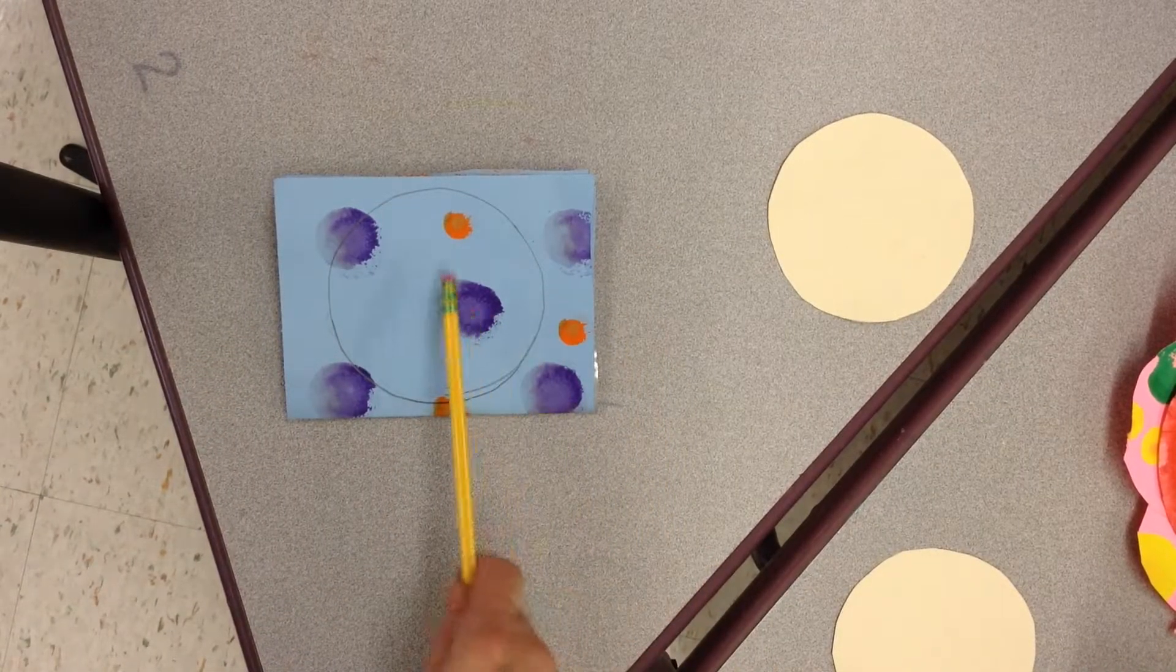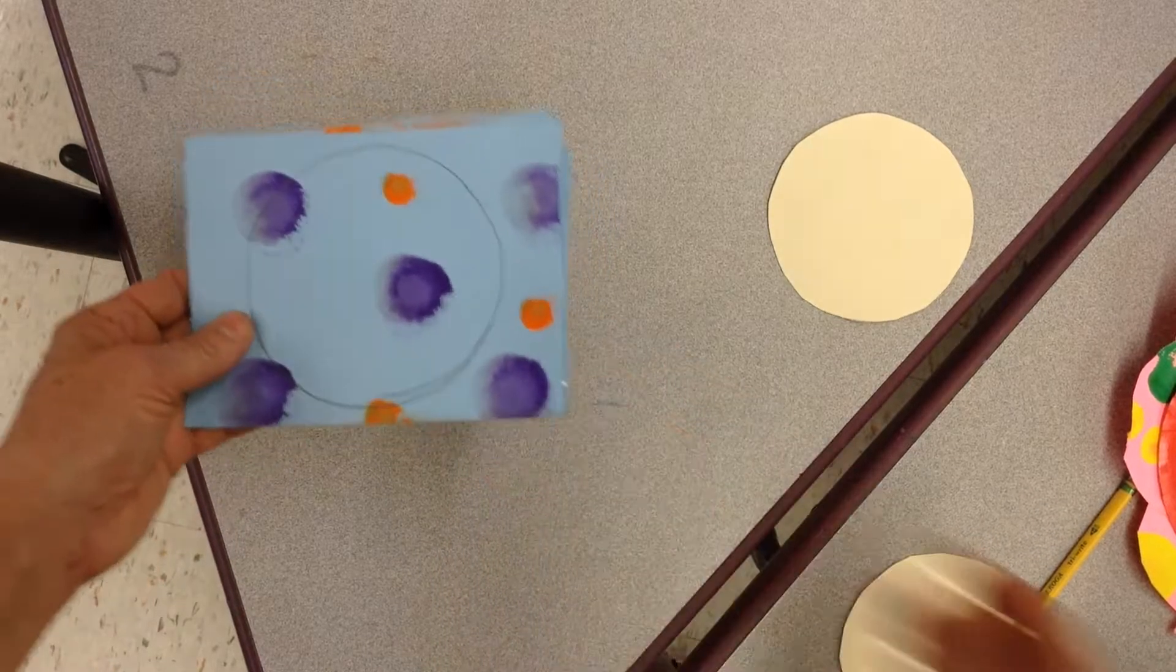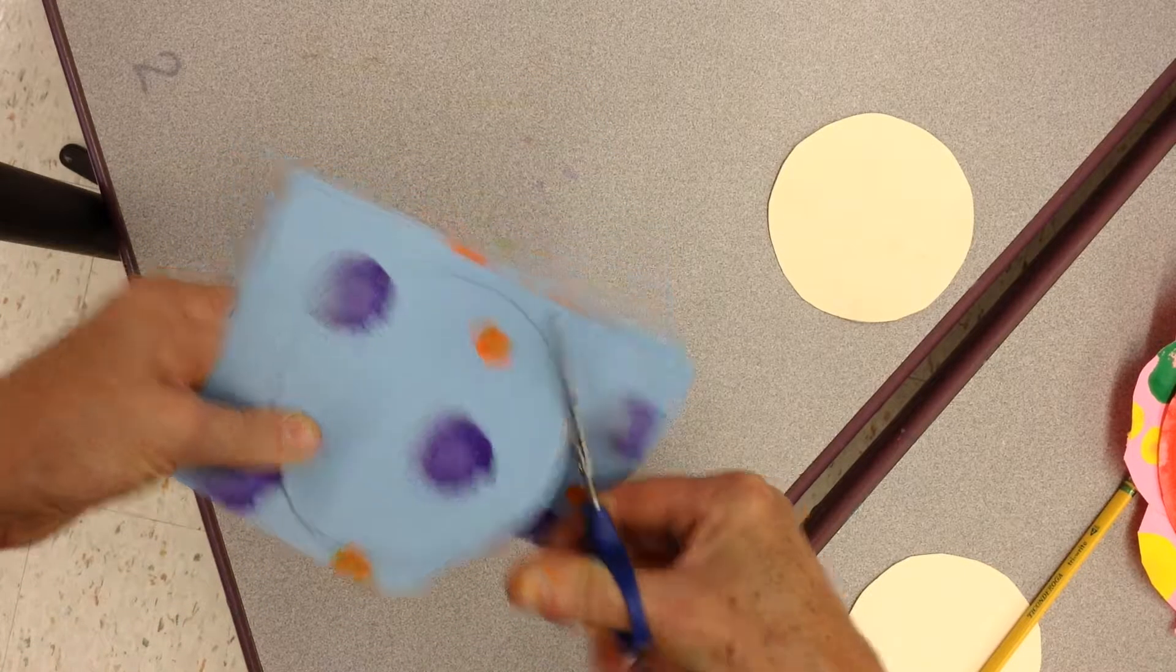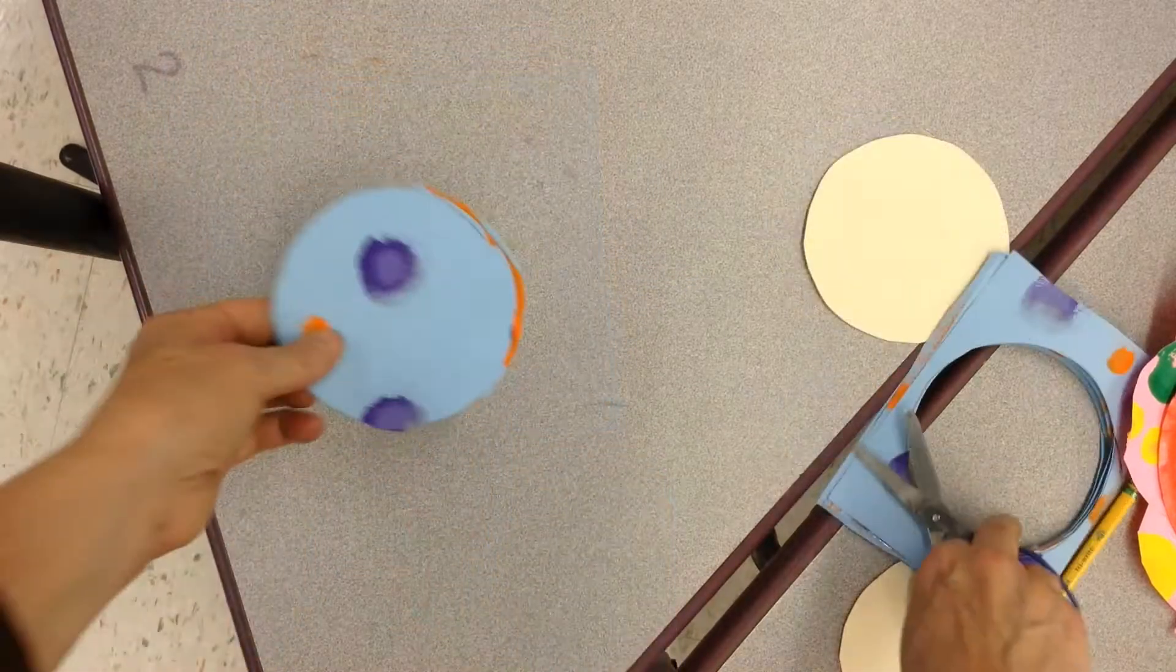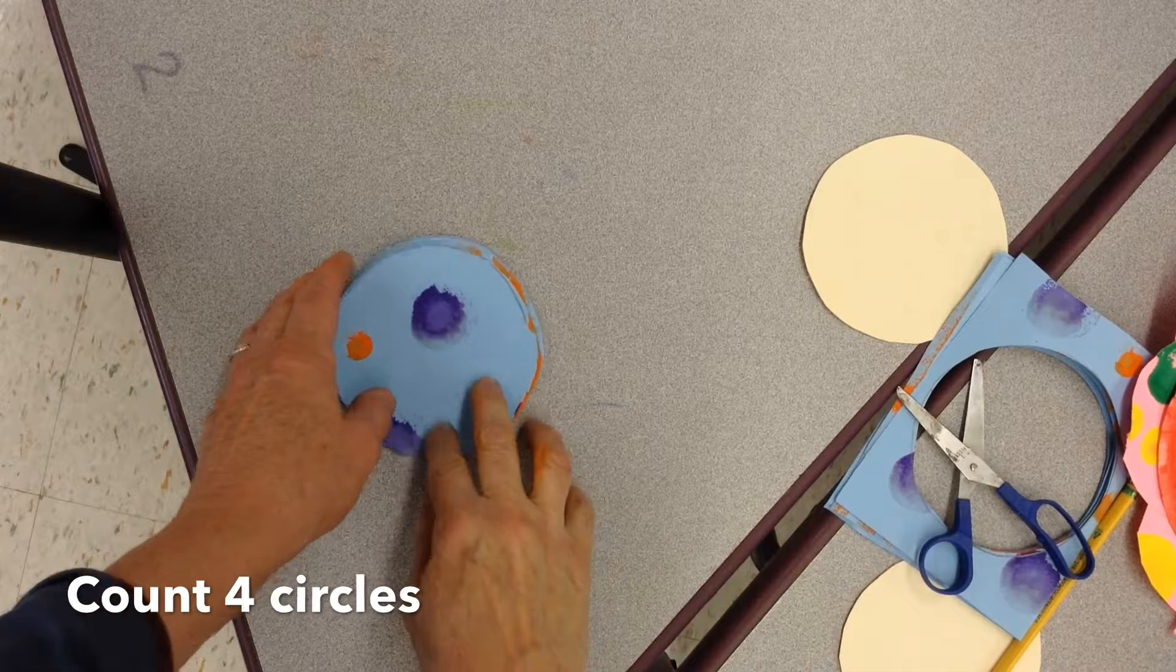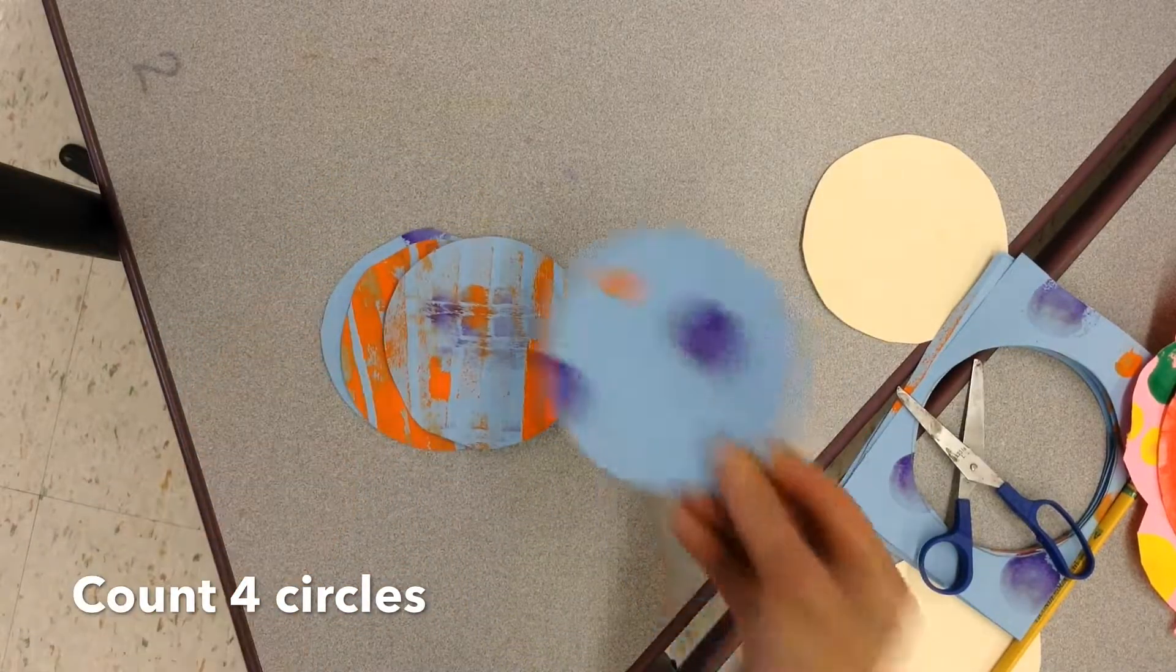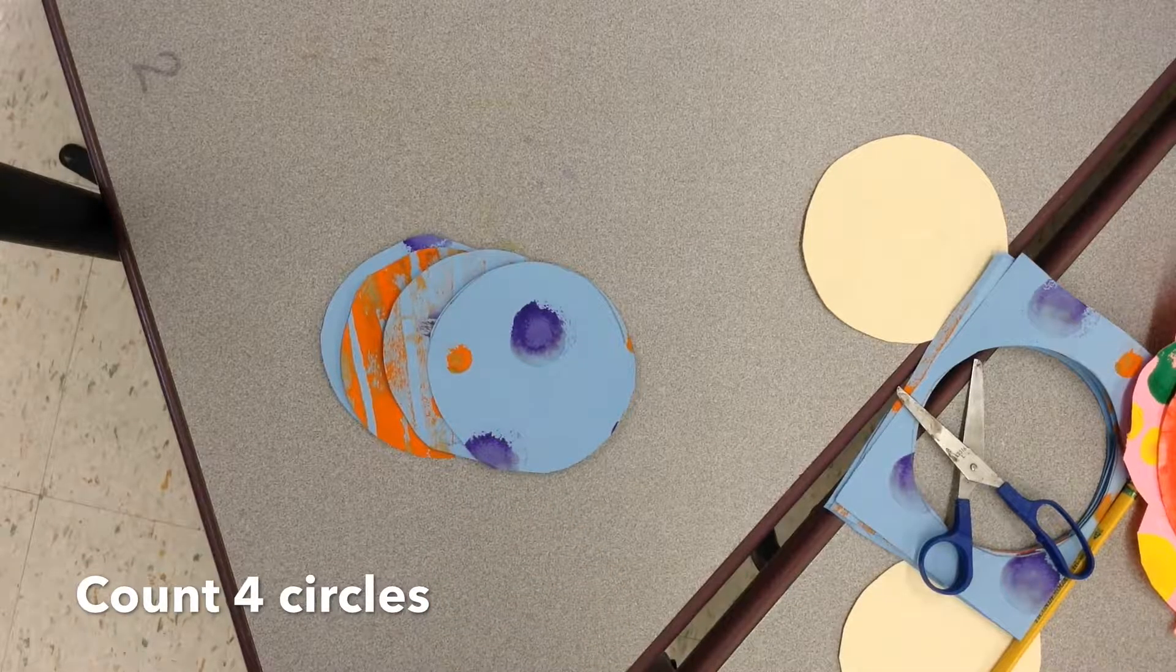Now I have my papers folded, I've traced my circle, and now it's time to cut on the line. So how many circles should I have? That's right, you should have four circles. One, two, three, four, with your nice painting on it.